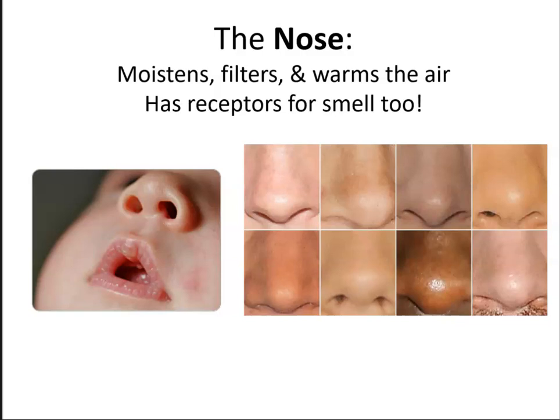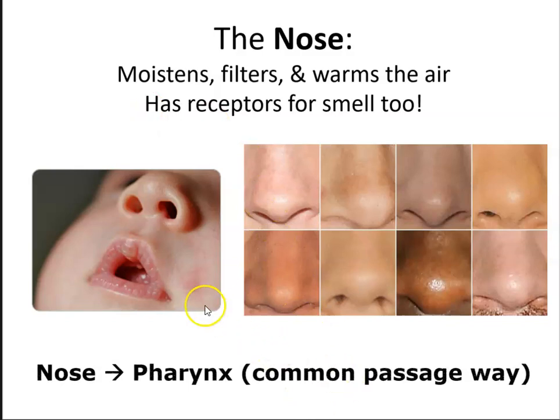One of the first structures in our upper respiratory tract is the nose. The nose helps moisten, filter, and warm the air, and has receptors for smell. From the nose, air will travel into the nasal cavity and then hit the pharynx — a common passageway that connects the nasal cavity to the larynx. The pharynx is made up of different parts: the nasopharynx, posterior to the nasal cavity; the oropharynx, posterior to the oral cavity; and finally the laryngopharynx, near the larynx.